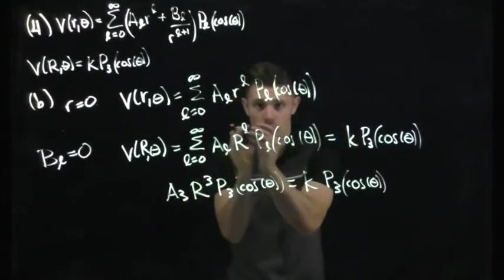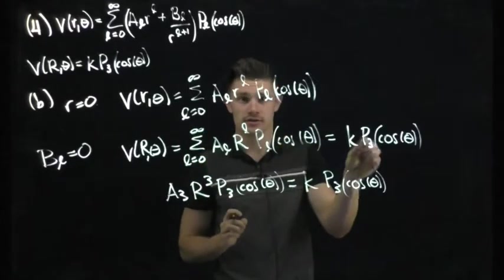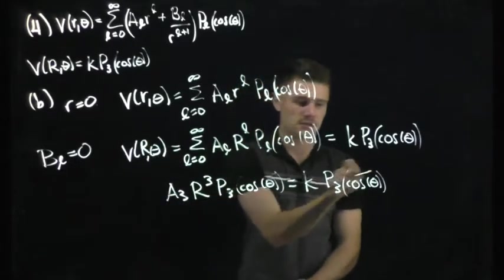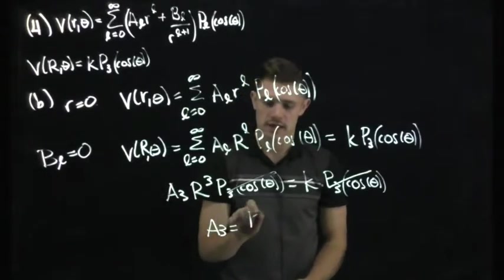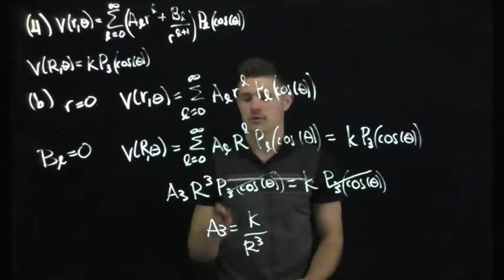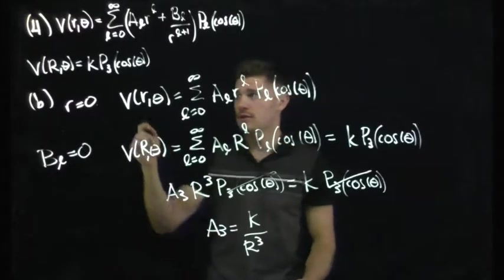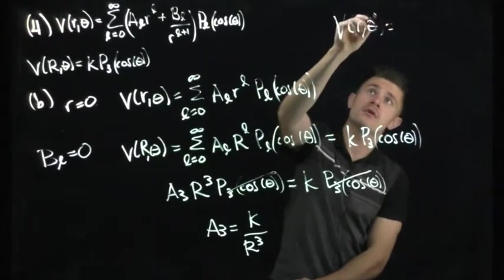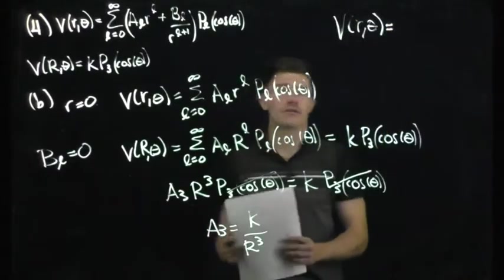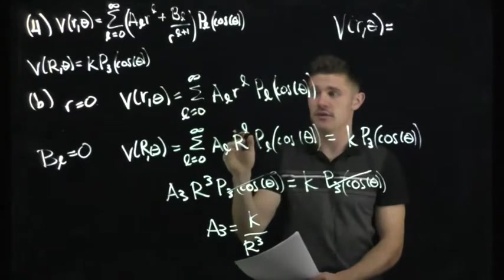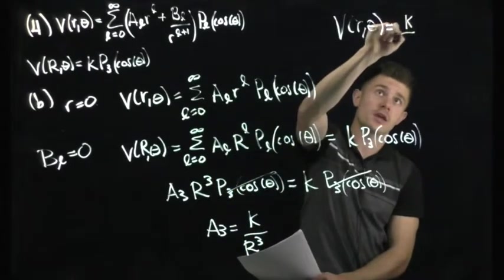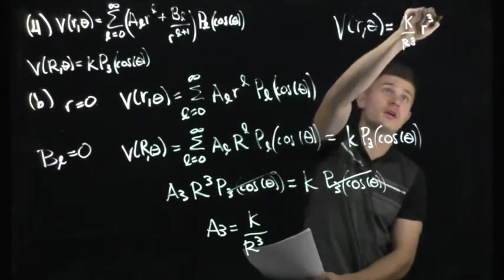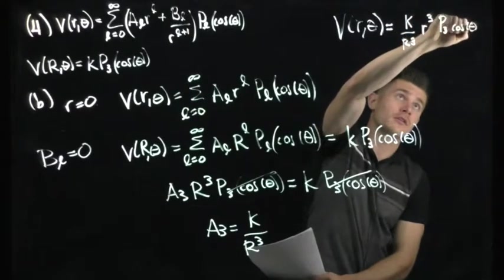Due to the orthogonality of the Legendre polynomials, the only term we consider is the P₃ term. The Legendre polynomials cancel from both sides, giving A₃ = K / R³. We can just substitute and solve for A₃.